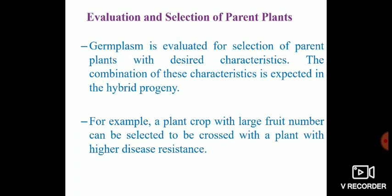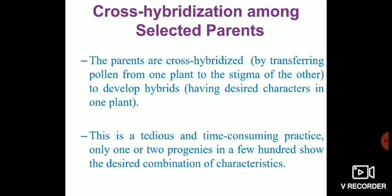The next step is evaluation and selection of parent plants. In this step, you evaluate all the different varieties in the germplasm and select two different parent plants in which the desired characters are present. For example, out of 200 different varieties collected, you may wish to combine a plant with a large fruit number and a plant with higher disease resistance as selected parents.